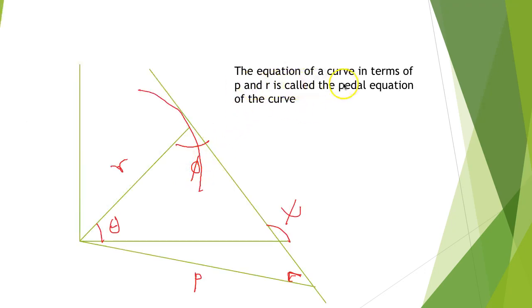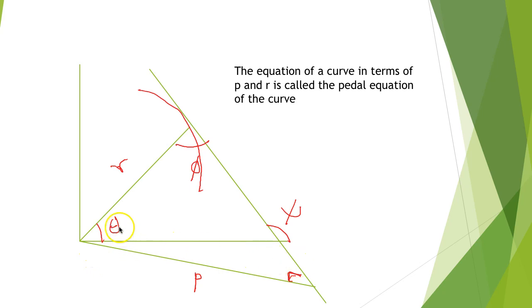The equation of a curve in terms of P and R is called the pedal equation of a curve. We have a curve here with a tangent to the curve, and P is the length of the perpendicular from the origin to the curve. This is θ, this is φ, and this angle is called ψ. So the equation of a curve in terms of P and R is called the pedal equation of the curve.